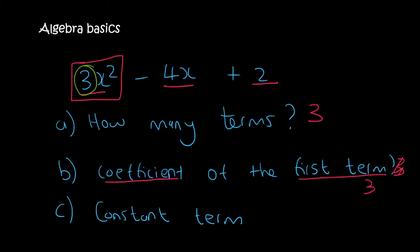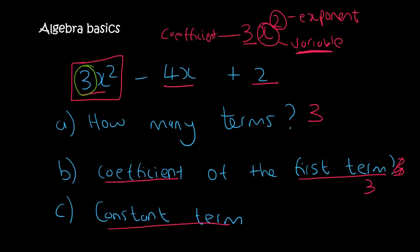Okay, so we said that if you have something like 3x squared, the 3 is the coefficient, the 2 is the exponent, and the x is the variable. Now the word vary means change. So in number c, they're asking you for the constant term. So it's the one that can't change. So it can't be this, because that has an x and that x can change because it's called a variable. But this one does not have an x, and so this is called the constant term.